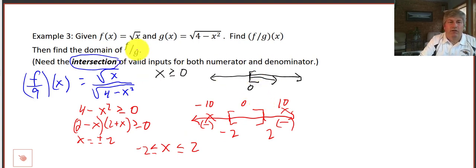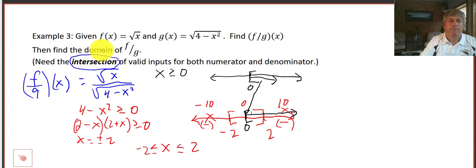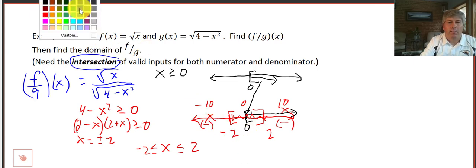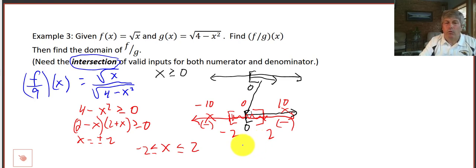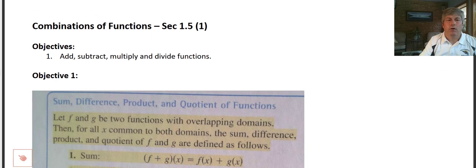Now we need the intersection of the two constraints. From the numerator, we only have values greater than or equal to 0. Taking the overlap of x between negative 2 and 2, and x greater than or equal to 0, our final domain is all values between 0 and 2 inclusive. So that is the introduction to combinations of functions, and we'll get more practice in class.